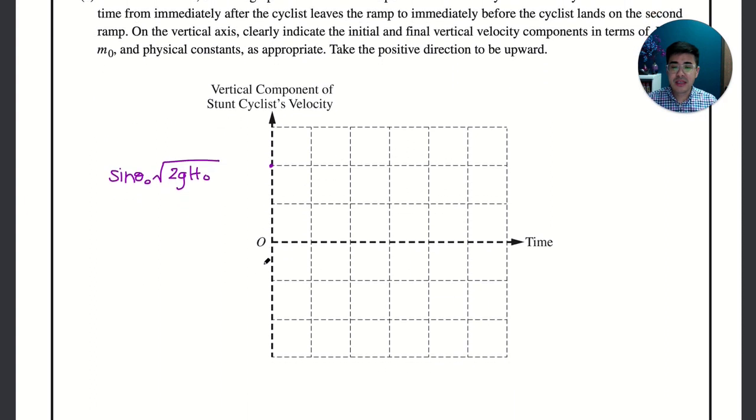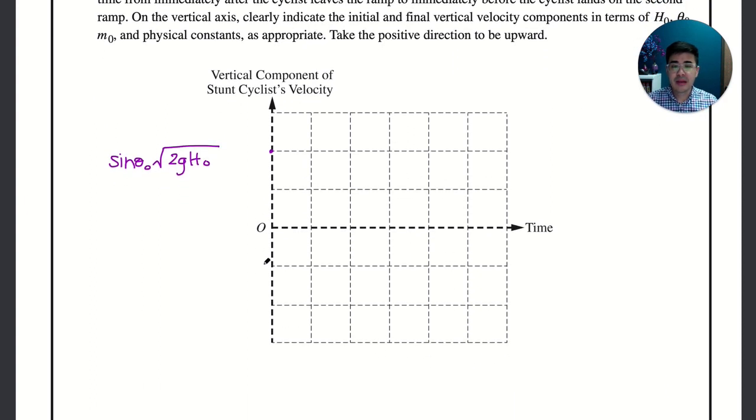That's the initial velocity when they finally leave the ramp. Because gravity is constant we're going to have a constant slope, so we would have it like this. If you want to label the final velocity, the final velocity would just be the exact opposite, so this would be negative sine theta naught square root 2gh naught. And there you go, that's that one.